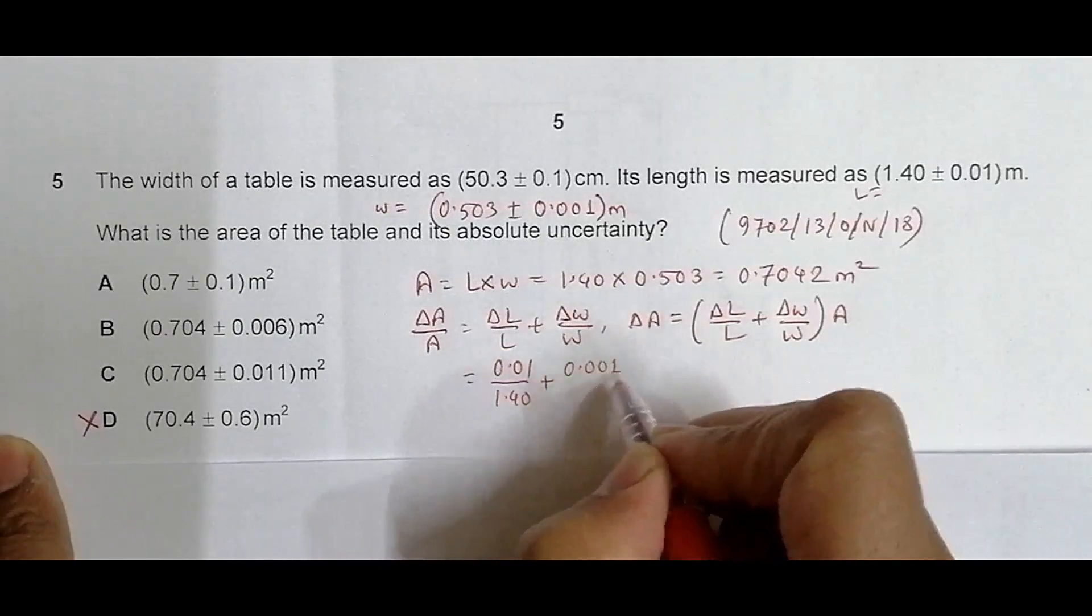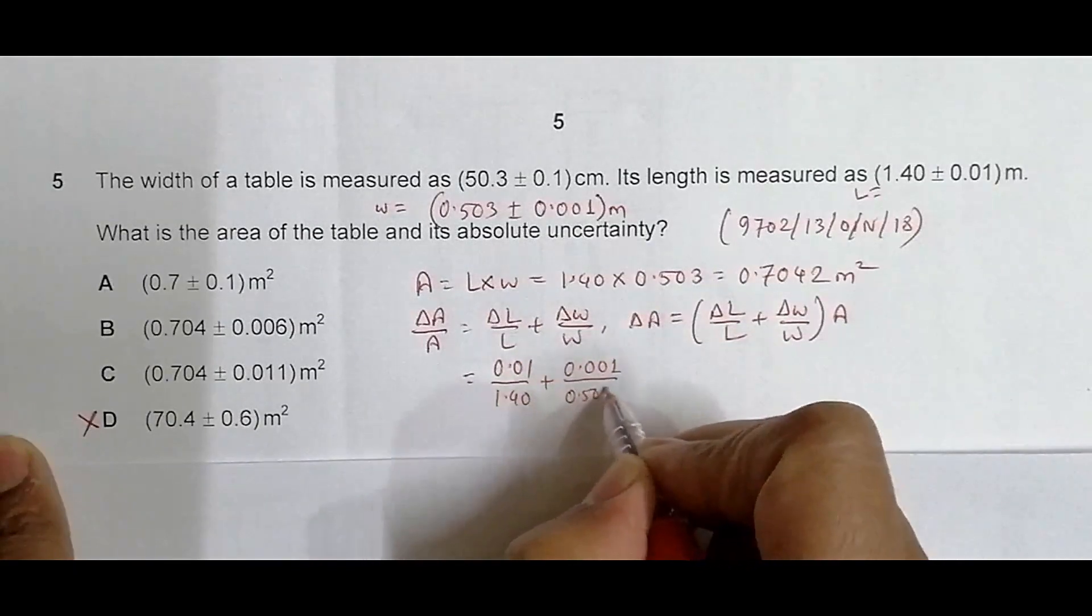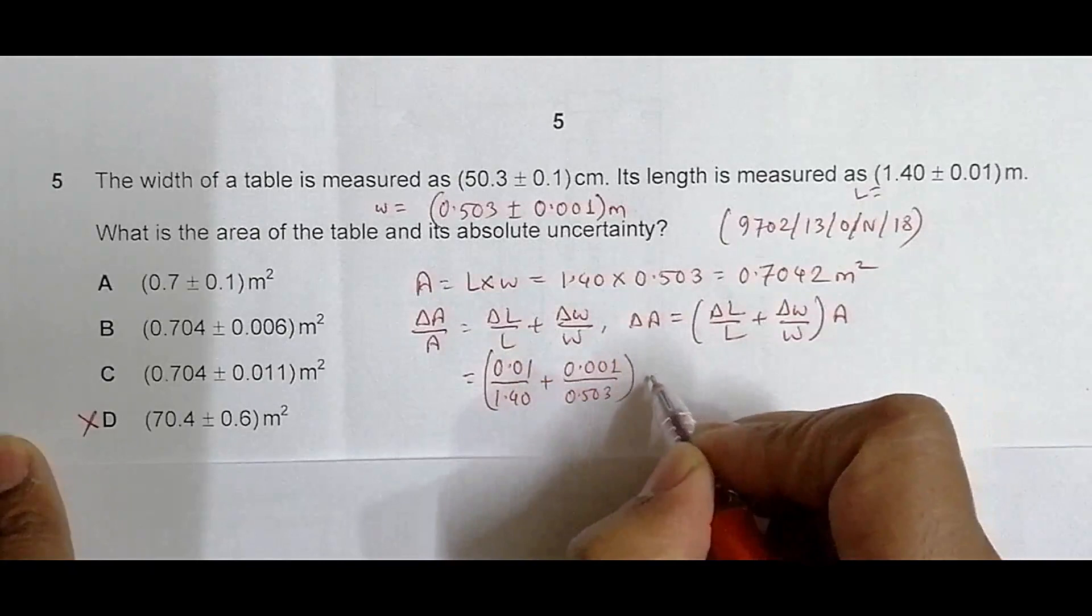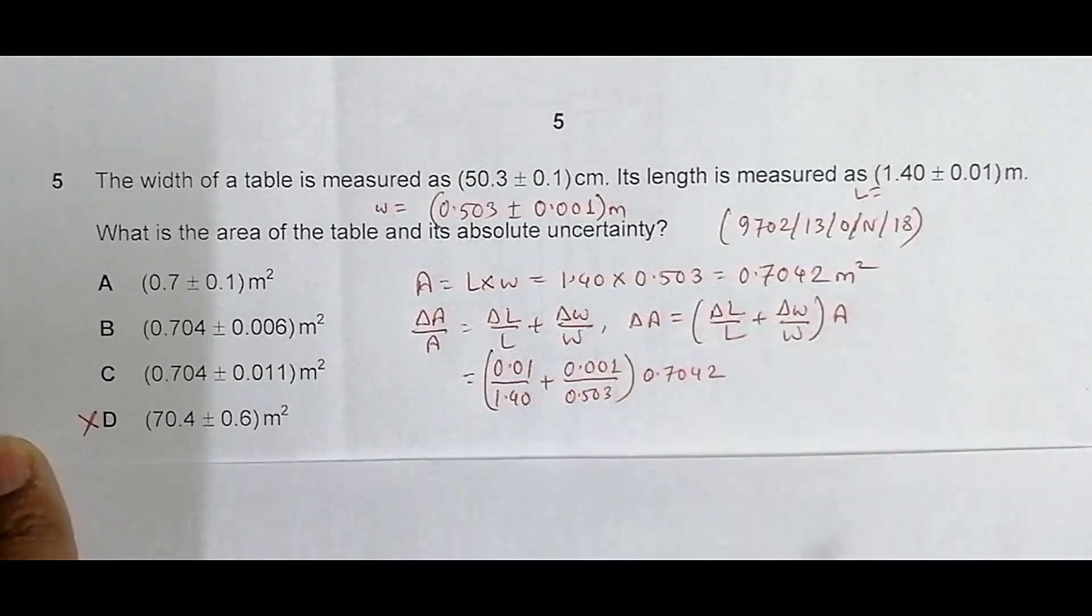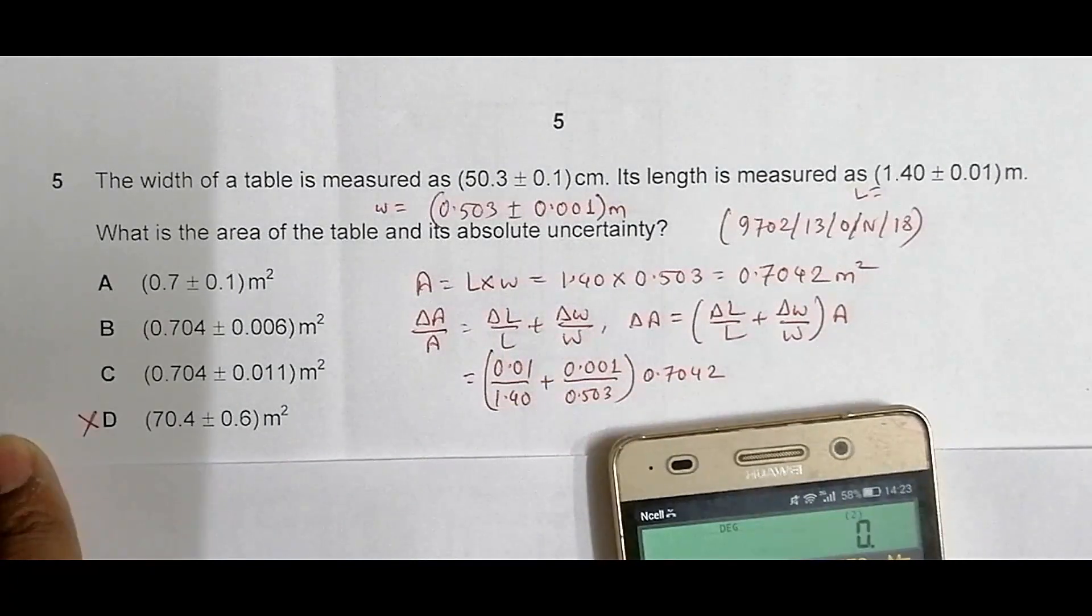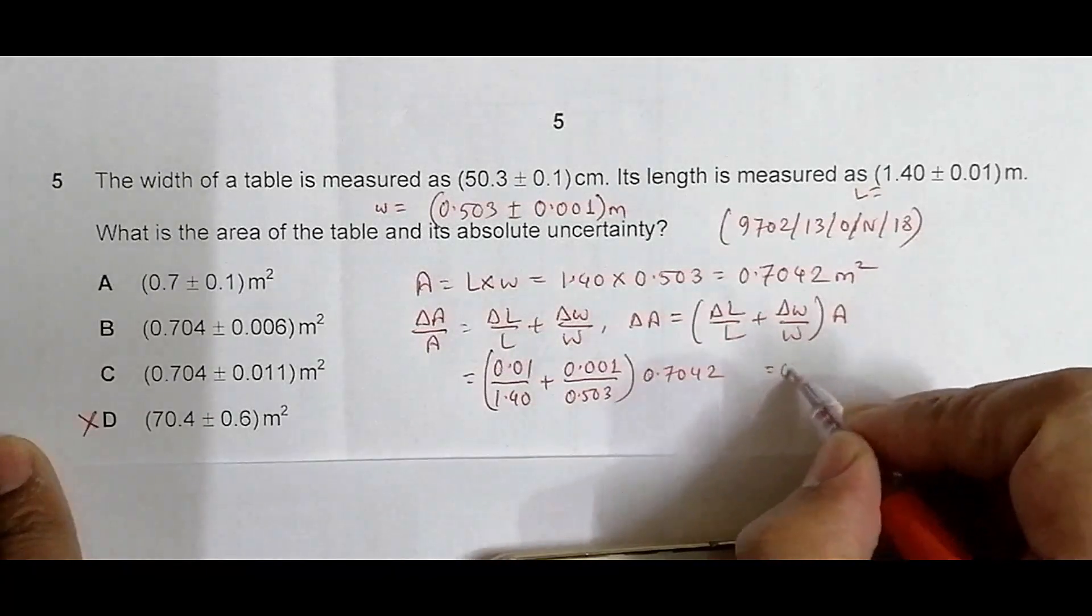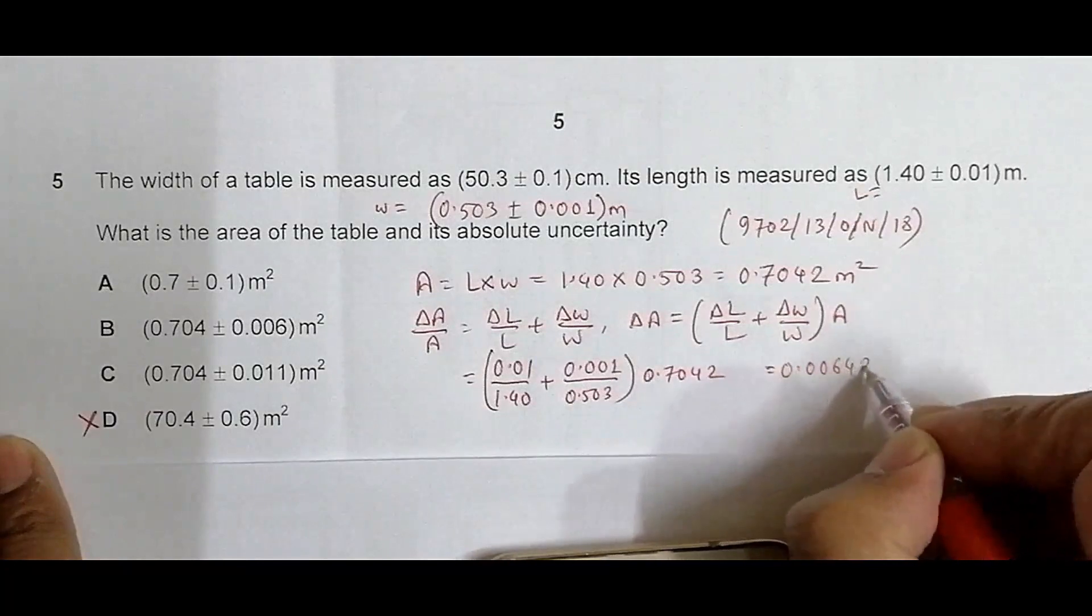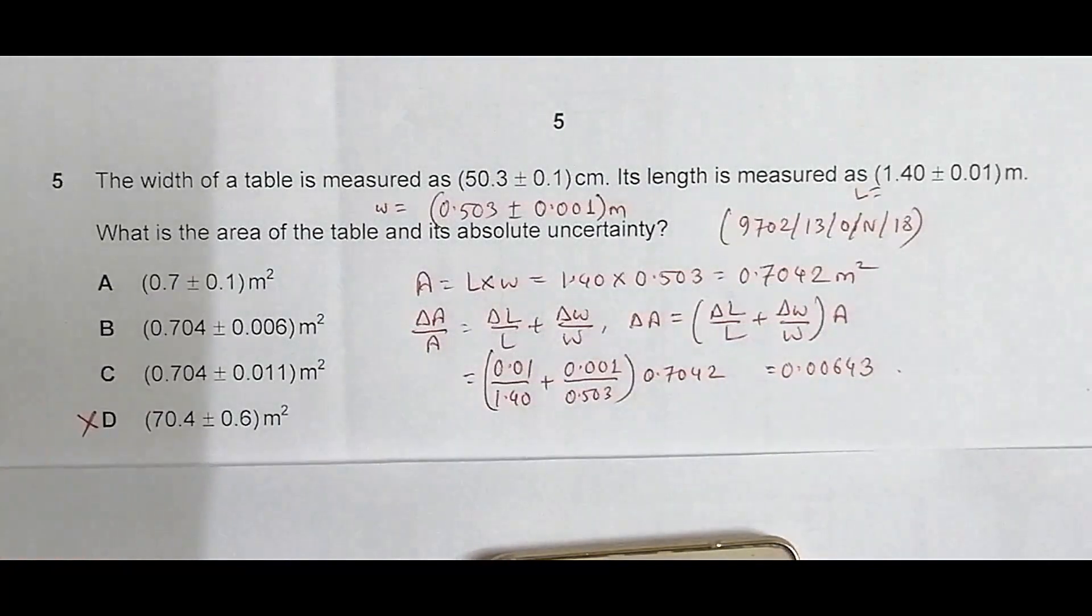If I do the calculations, it will be equal to, inside the bracket I have 0.01 divided by 1.4 plus 0.001 divided by 0.503, close bracket, equal to 0.00643.